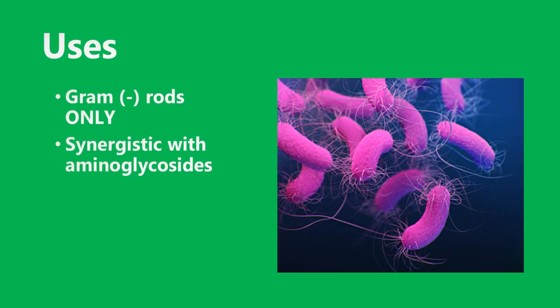In terms of the uses of Aztreonam, it is for gram-negative rods only. This is important. Aztreonam has no activity against gram-positive rods or anaerobes. It's mostly used for patients with allergies to penicillins and those who cannot tolerate aminoglycosides. But an important thing to know is that if you are giving aminoglycosides, Aztreonam is synergistic with that. The activity of both of those combines and powers up, so it is synergistic with aminoglycosides.